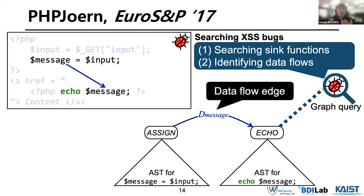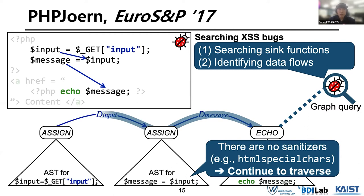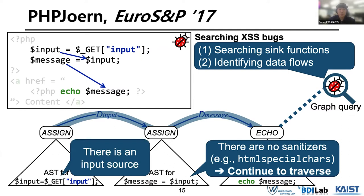As you can see, a data flow for the message variable exists between two statements, so the query performs backward traversal for this data flow entry. Since there are no appropriate sanitizations on the visited AST subtrees, this query decides to continue to traverse. On the next traversal for the data flow entry, we can reach through the AST subtree up to the gap variable that stores the user input, which is an input source. Therefore, as a result of traversal, we can find a vulnerable path from an external input to a sink-critical function.